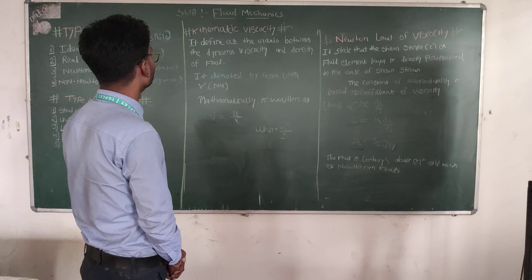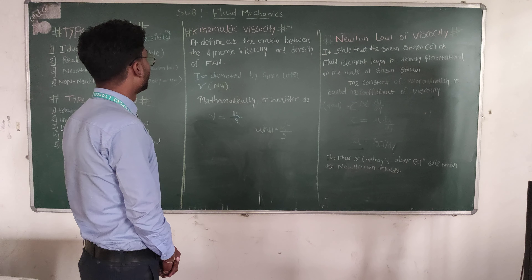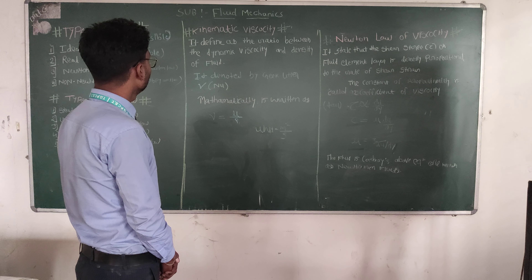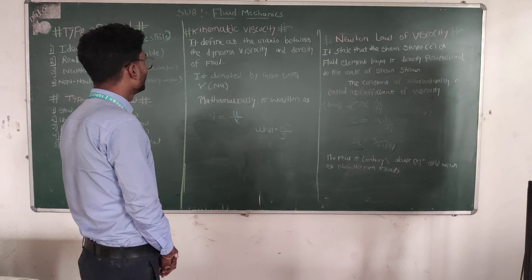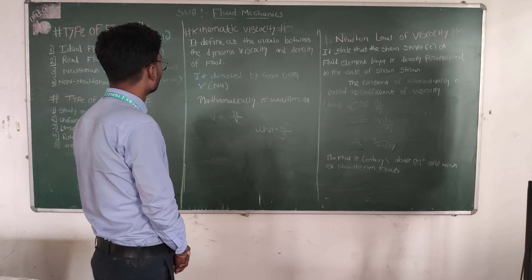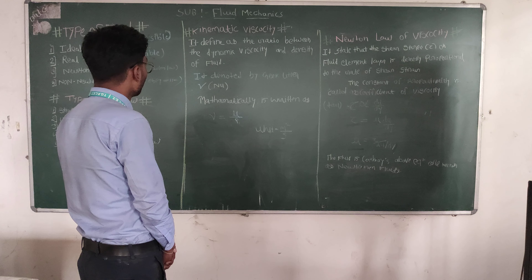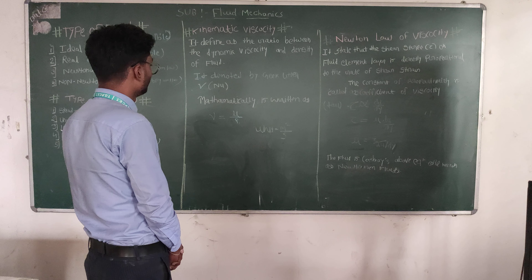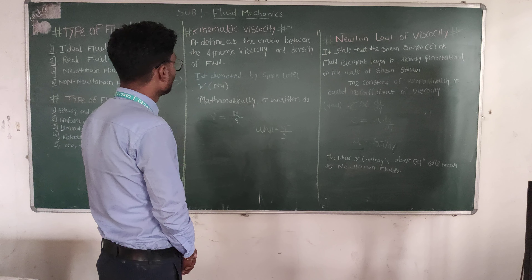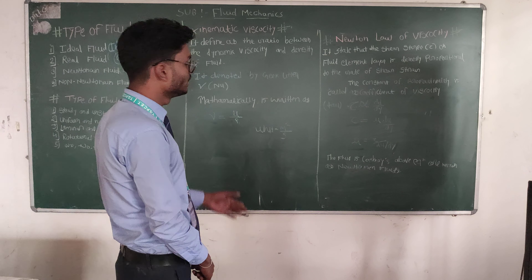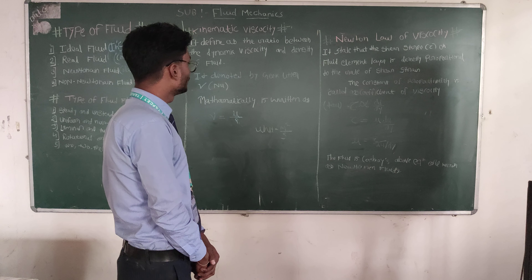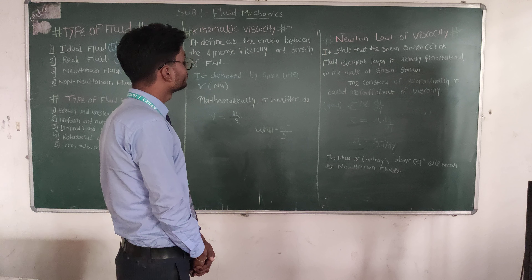Dynamic viscosity defines the ratio between the dynamic viscosity and the density of fluid. It is denoted by the Greek letter mu. Mathematically it is written as mu is equal to mu upon rho. It has a unit of m squared per second.